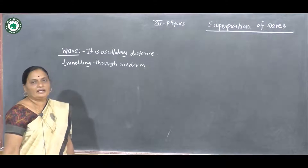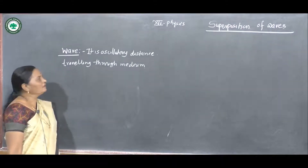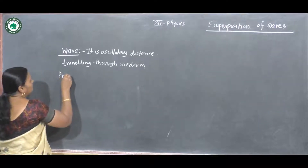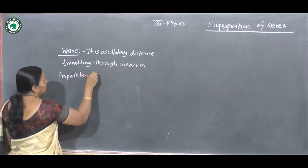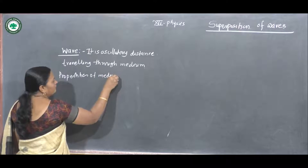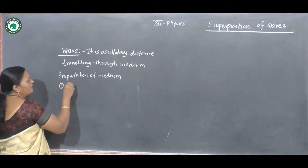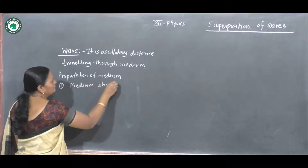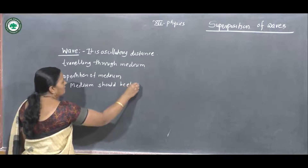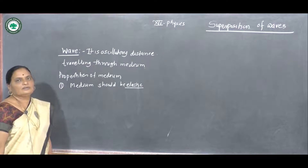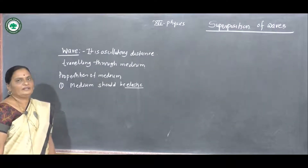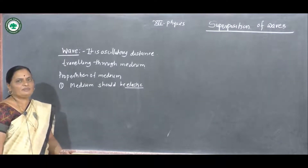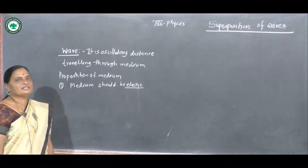When the wave propagates through a medium, the medium must have certain properties. The first property is that the medium should be elastic. Elasticity is the property that when a force is applied to a body, it changes its shape, and when the force is removed, it regains its original position.